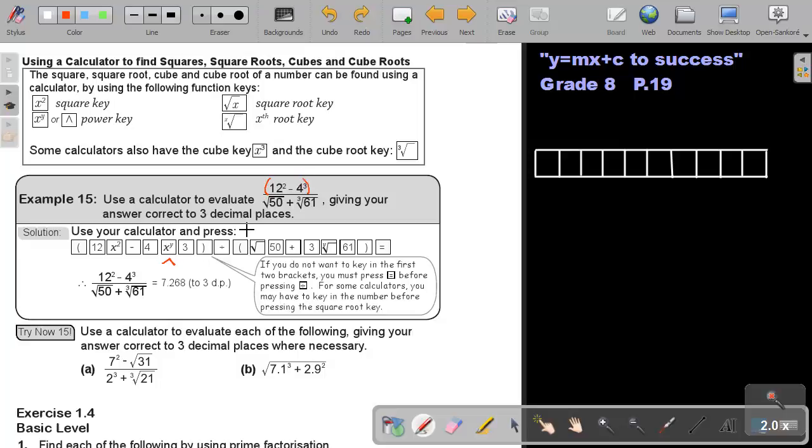I actually just put in brackets there. Then division, and I'll start again with a bracket. And then press square root, that square root, then 50, then plus. Now I'm going to press, if my calculator is not having that key, I can press 3 because I want to find the cube root. So, 3, then the root key, then I press the 61, then I end by closing the bracket, and then don't forget your equal.